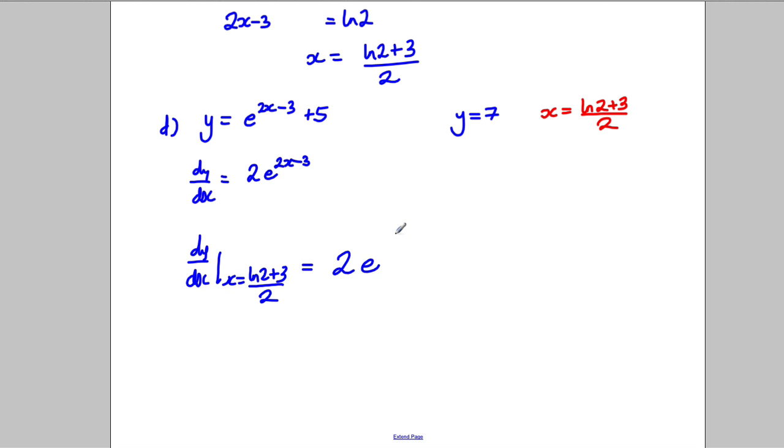So 2e to the power of 2, ln 2, add 3, all divided by 2, take away 3, like that. Now the 2s cancel here.